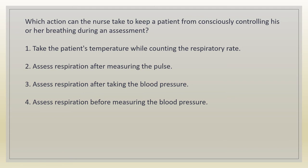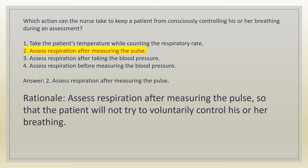Which action can the nurse take to keep a patient from consciously controlling his or her breathing during an assessment? 1. Take the patient's temperature while counting the respiratory rate. 2. Assess respiration after measuring the pulse. 3. Assess respiration after taking the blood pressure. 4. Assess respiration before measuring the blood pressure. Answer: 2. Assess respiration after measuring the pulse. Rationale: assess respiration after measuring the pulse so the patient will not try to voluntarily control his or her breathing.